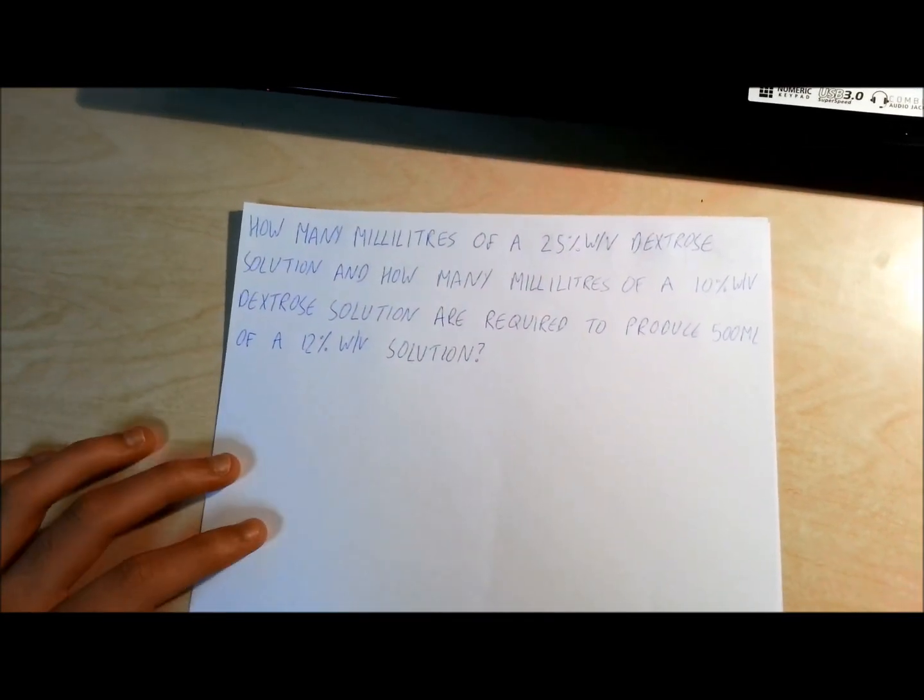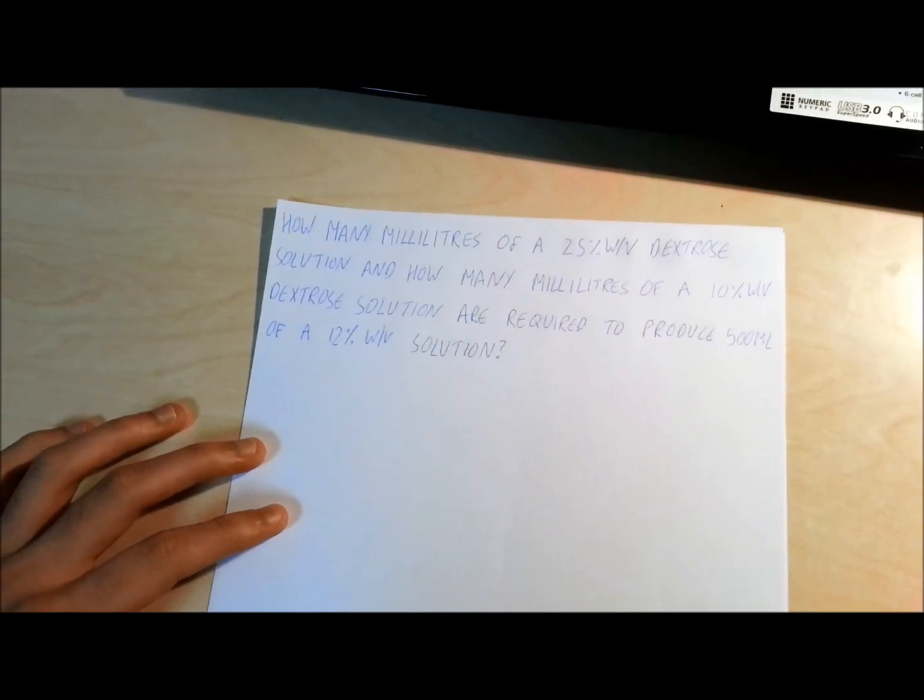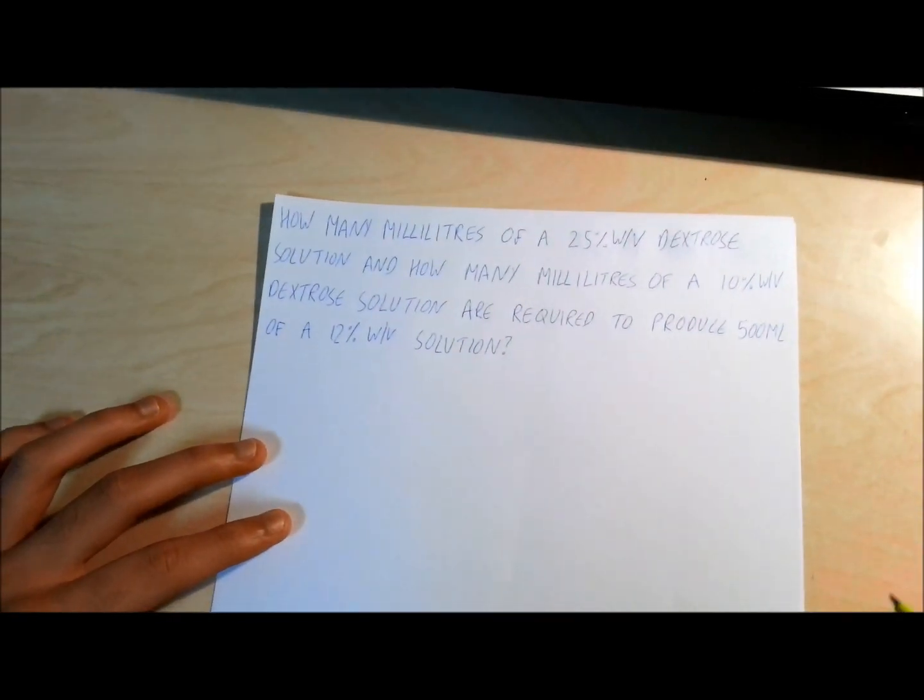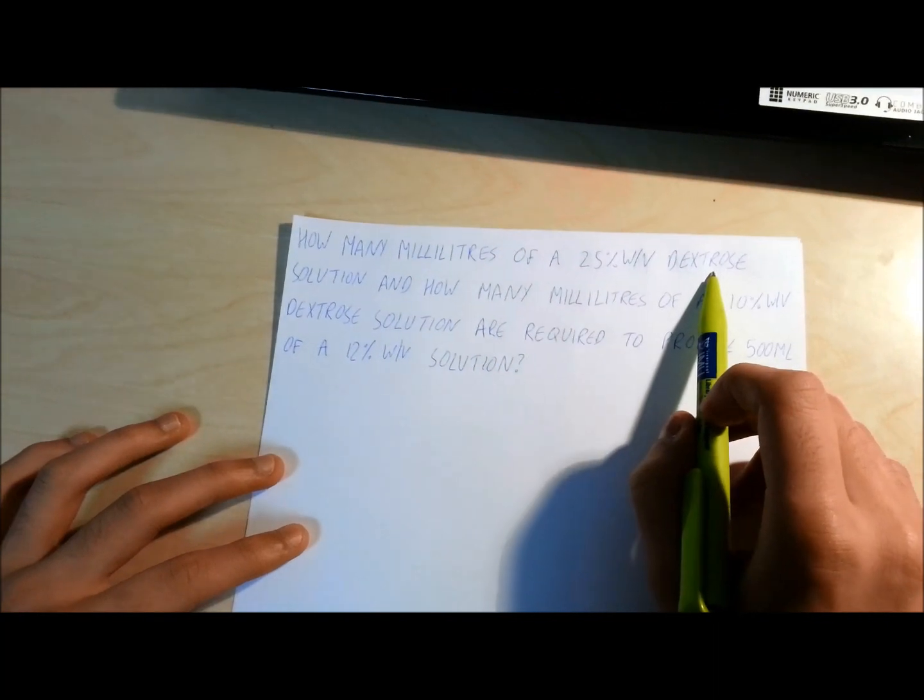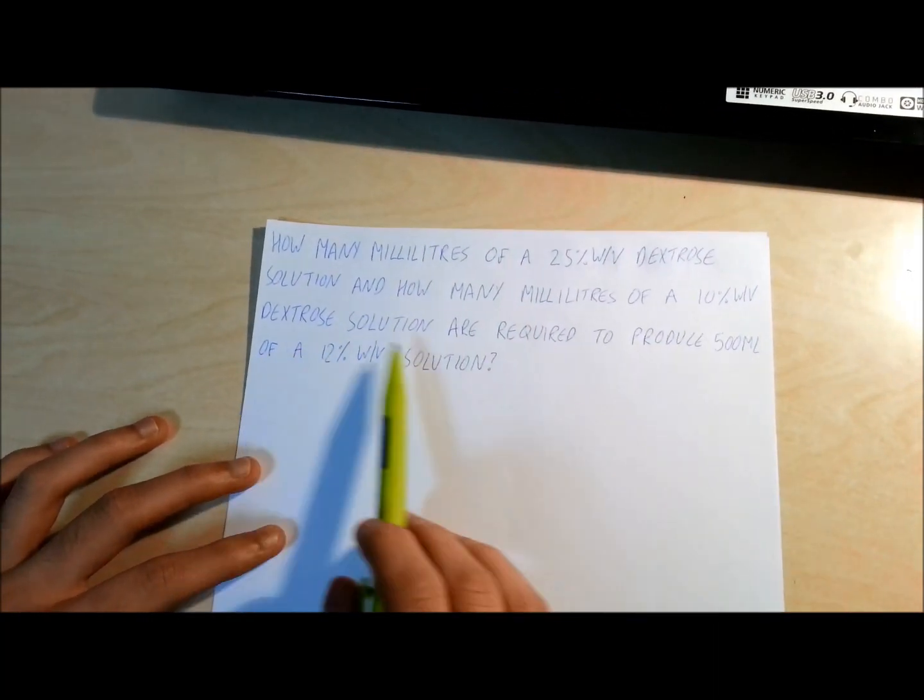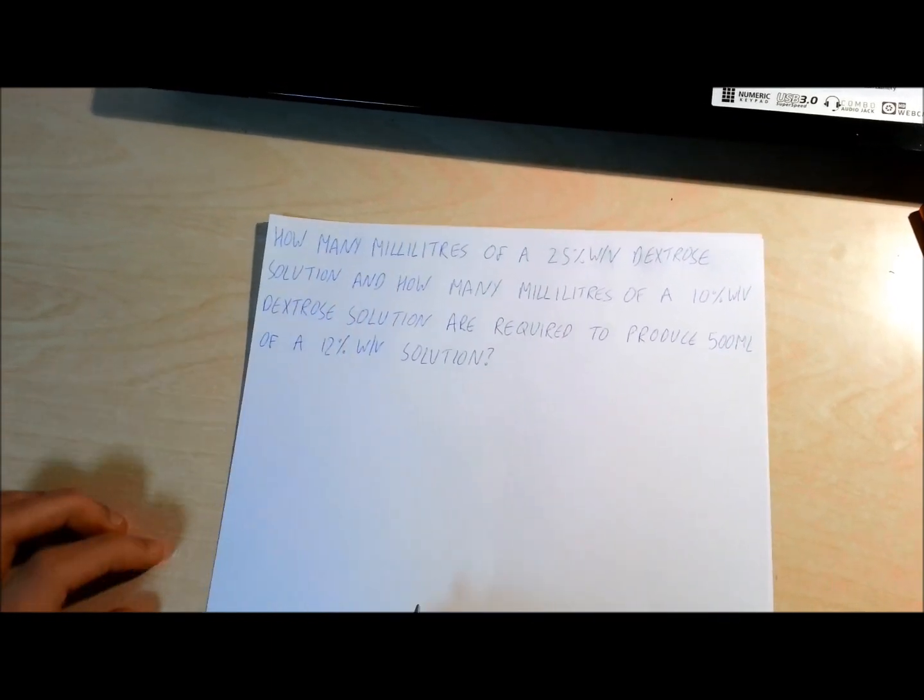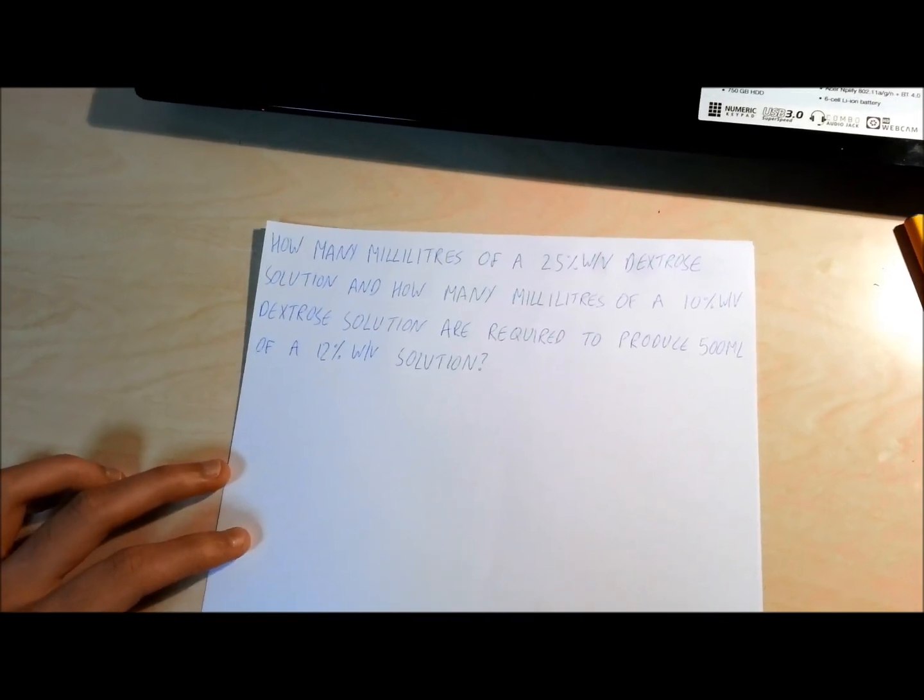Hello. A local student asked us how to work out this specific question: How many milliliters of a 25% weight per volume dextrose solution and how many milliliters of a 10% weight per volume dextrose solution are required to produce 500 mils of a 12% weight per volume solution?